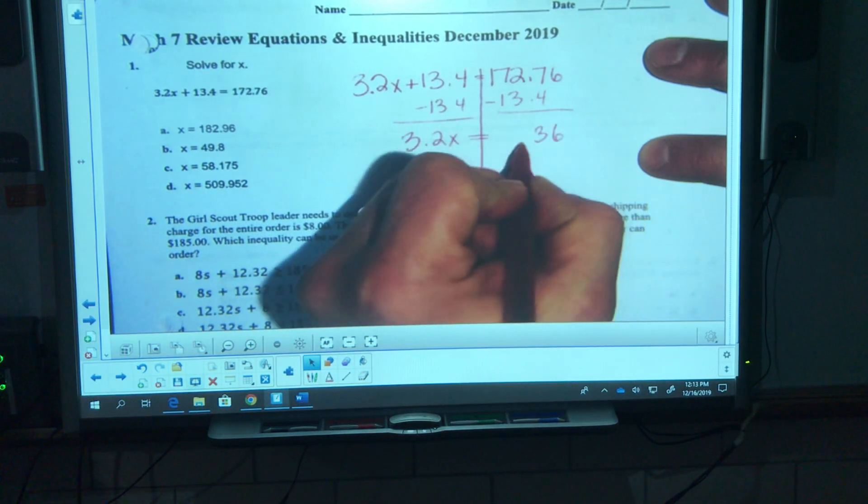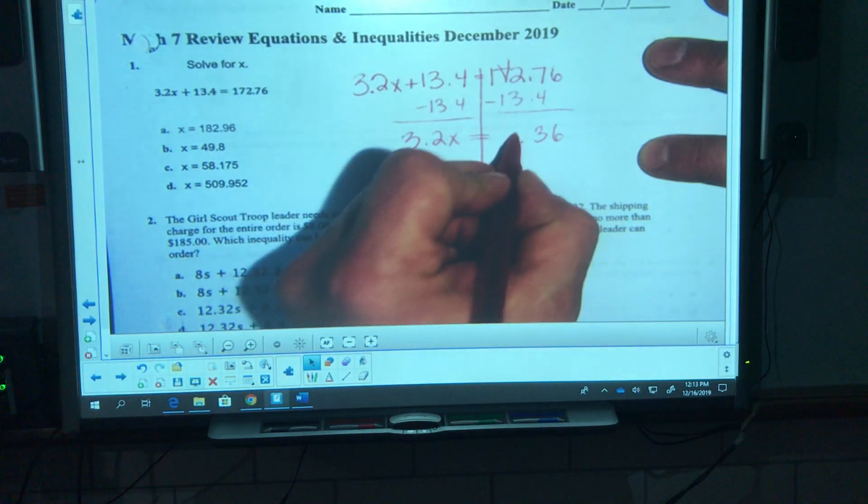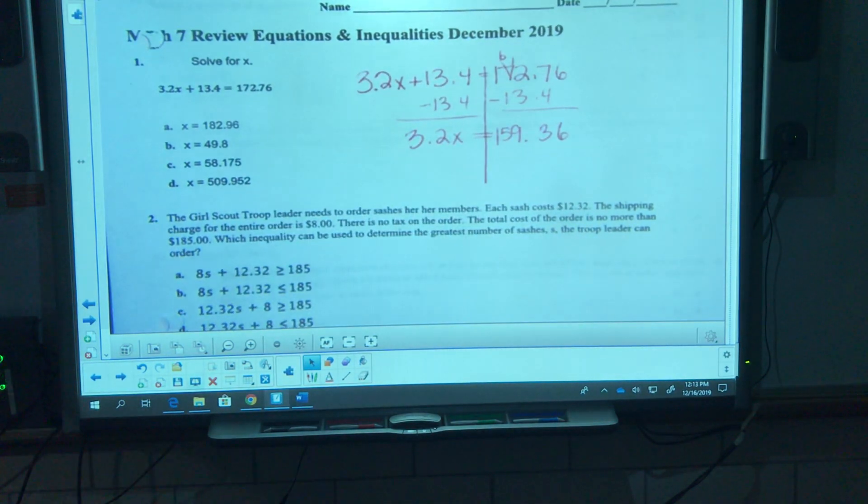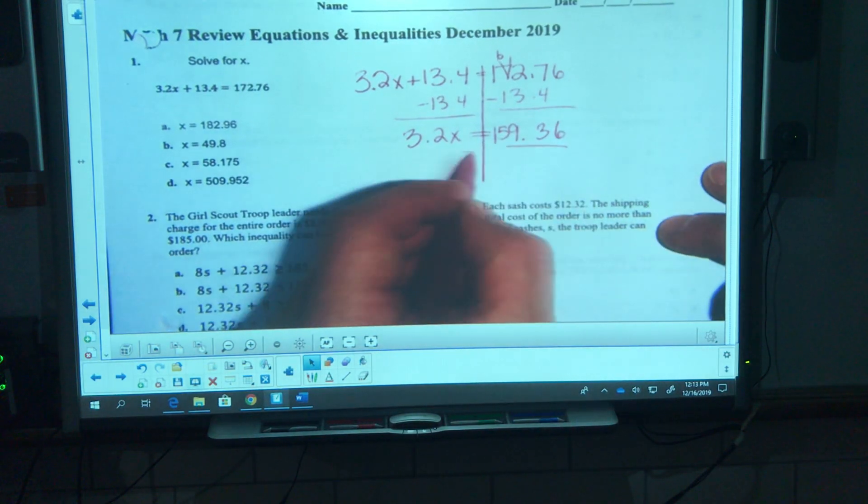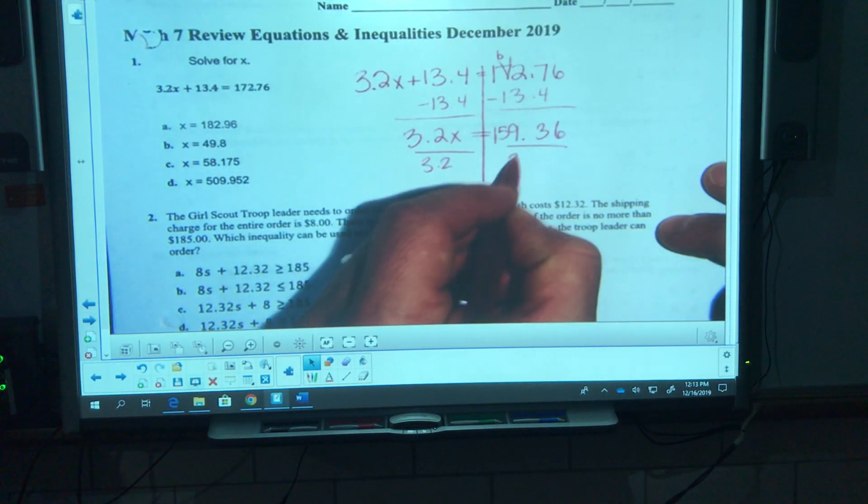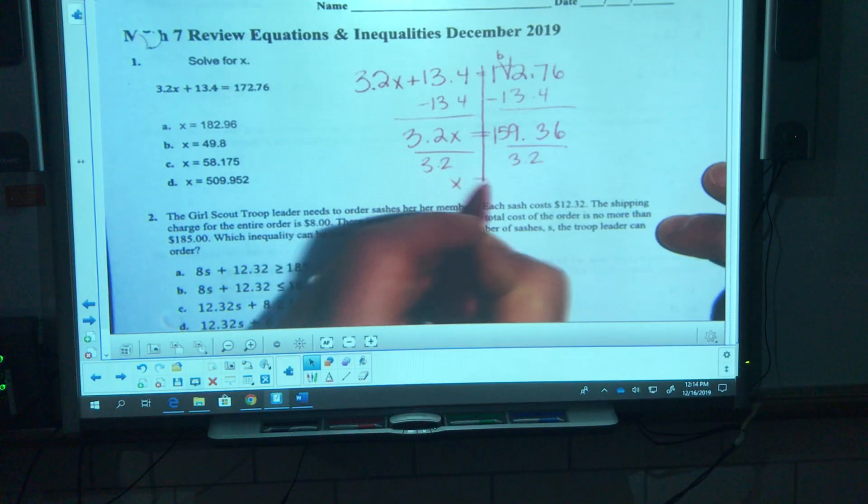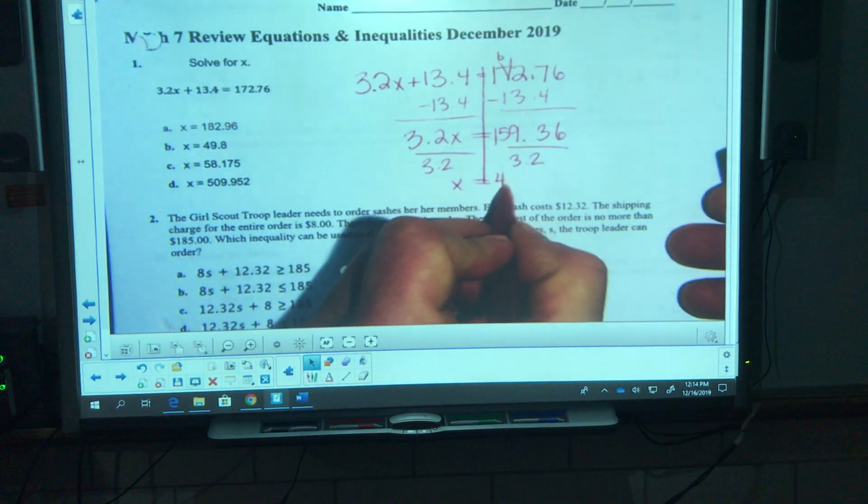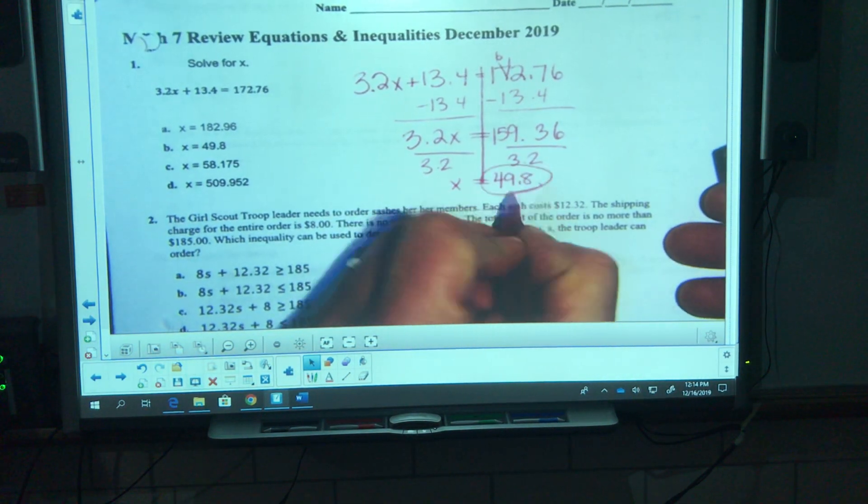And I get 3.2x is equal to 159.36. I'm going to grab my calculator and divide both sides by 3.2. 159.36 divided by 3.2 is 49.8. That's gonna be letter B.